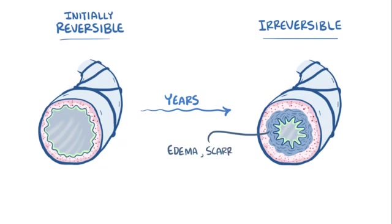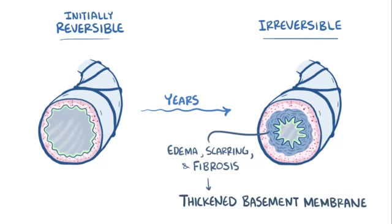Edema, scarring, and fibrosis build up, leading to thickening of the epithelial basement membrane, which permanently reduces the airway diameter.